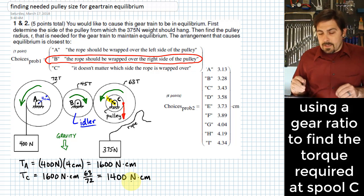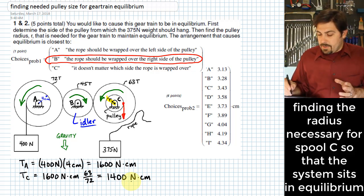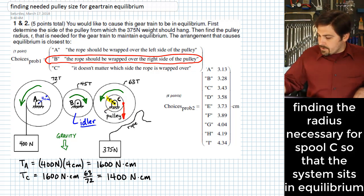Now that's how much torque we need to put on this spool over at C, and so what we need to do is figure out that radius R. To do that, let's go ahead and remind ourselves that torque is equal to force times radius. And if we solve this for radius, this ends up giving us torque over force.